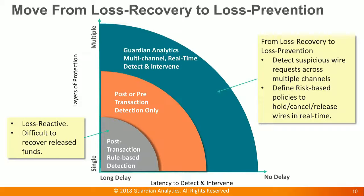Guardian Analytics provides multi-channel real-time detection and intervention, moving customers from loss recovery to loss prevention by detecting suspicious wire requests across multiple channels — especially those initiated from digital banking channels. Customers can define risk-based policies to hold, cancel, or release wires in real time, so that automated intervention occurs before money leaves the account.